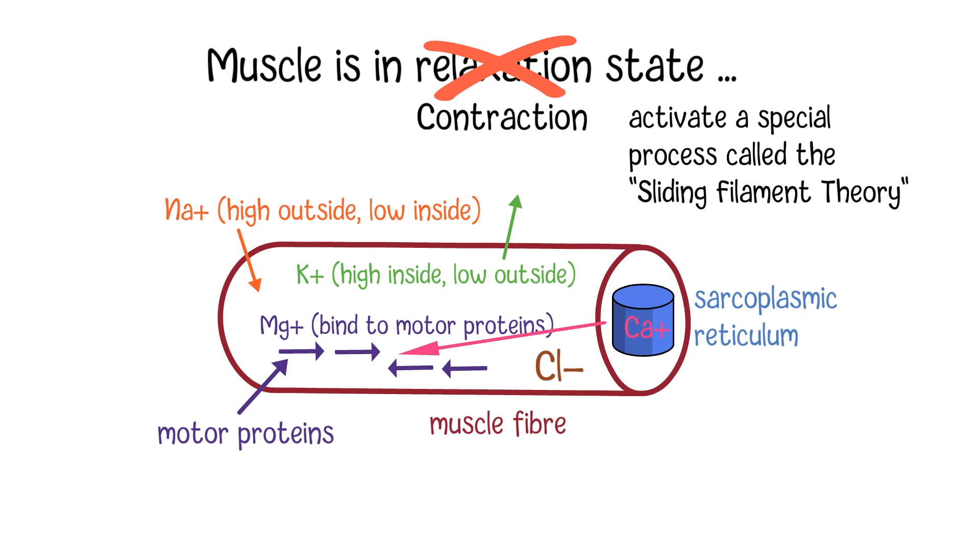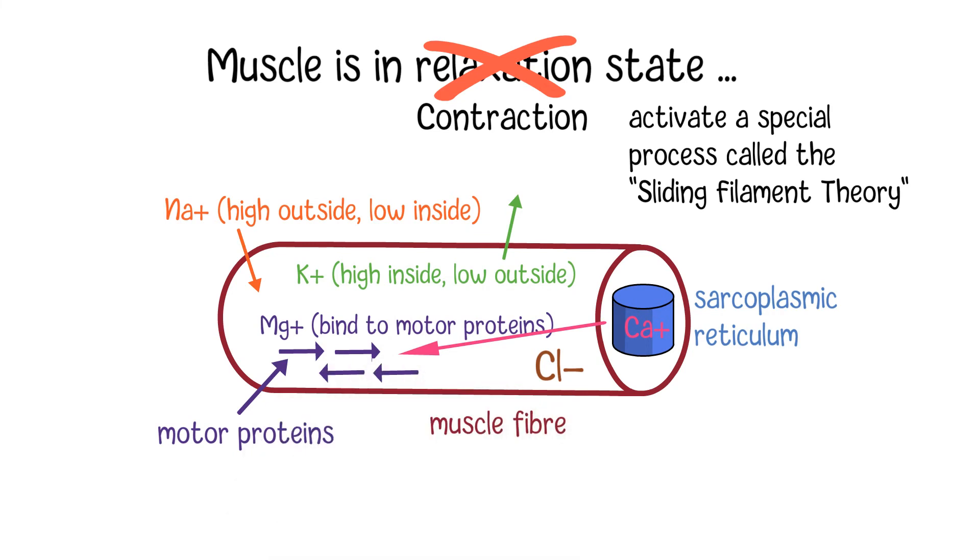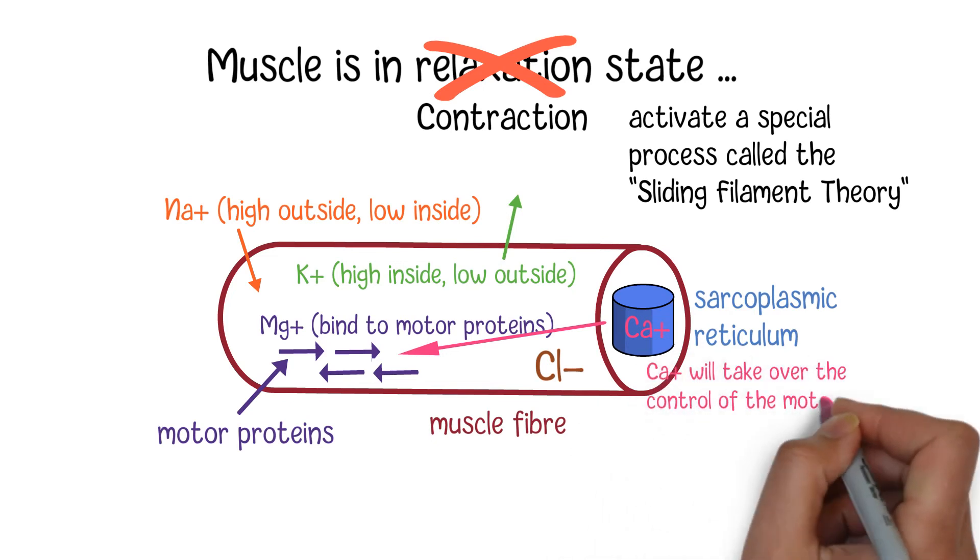Those calcium ions will work with the motor protein to activate the sliding filament theory process, which will make those motor proteins crawl along each other and cause muscle contraction. In the contracted state, the increased release of calcium from the sarcoplasmic reticulum will take over the control of the motor proteins from the magnesium.